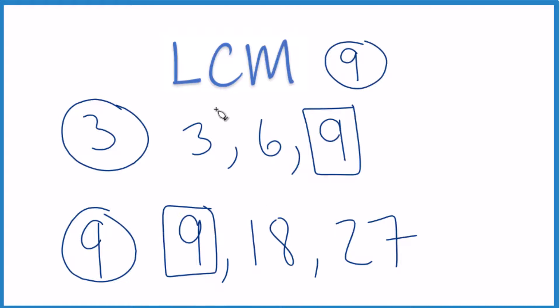You could have said 1 times 3 gives you 3. 2 times 3 gives you 6. 3 times 3 gives you 9. Or you can just add them together. Either way, you're getting the multiples.